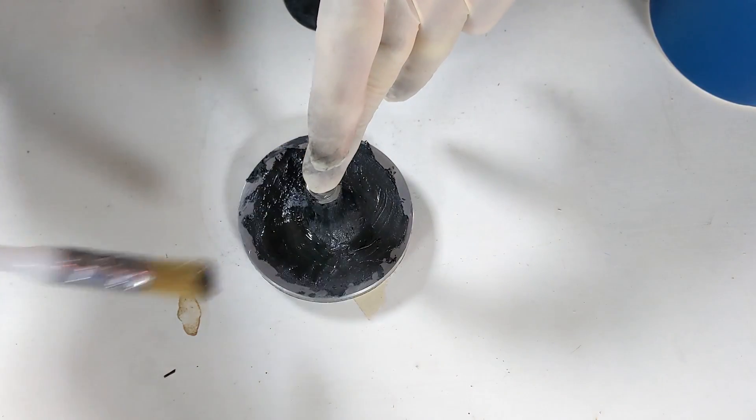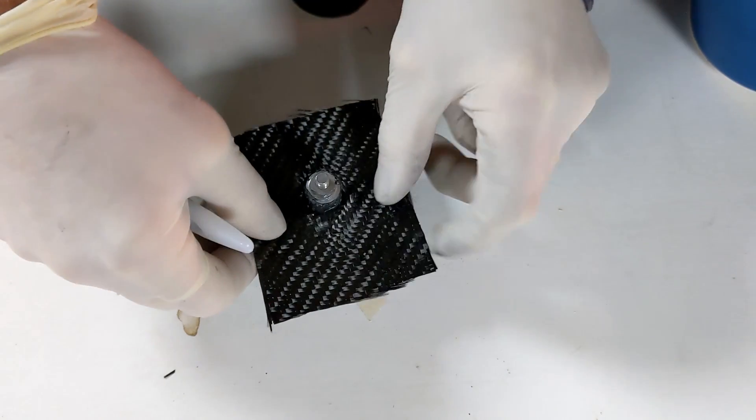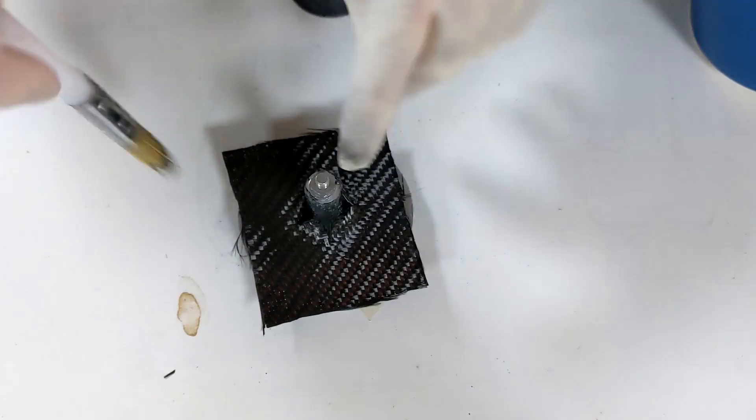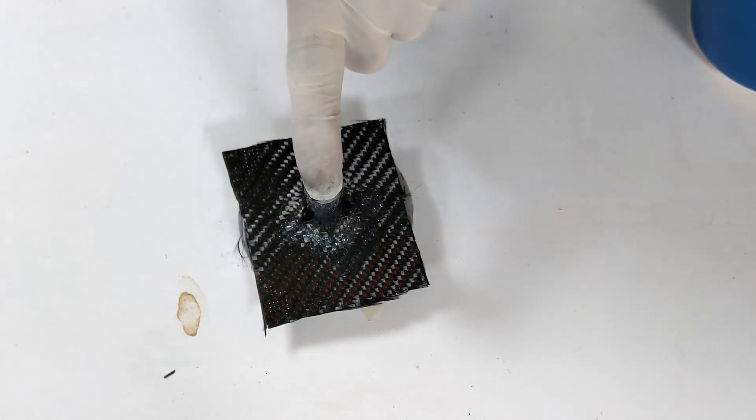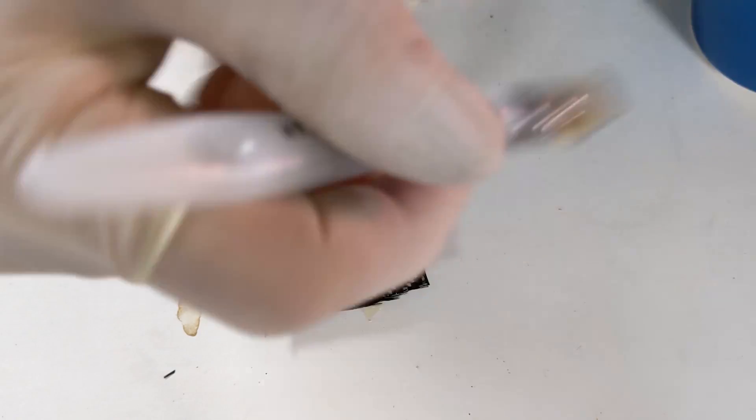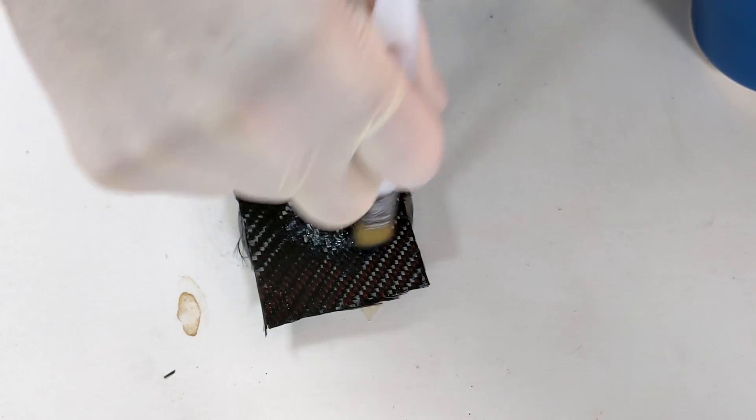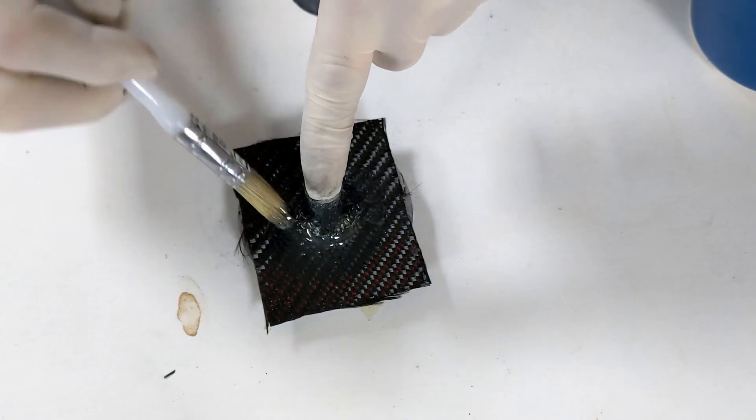And basically just going to get a load of resin on. Got a bit of carbon and we've cut a little hole in the middle and we're just going to poke it down. The reason these bits are a bit bigger is that if you cut them too small they just become an absolute nightmare. They fall apart.